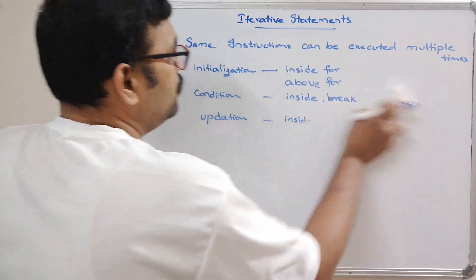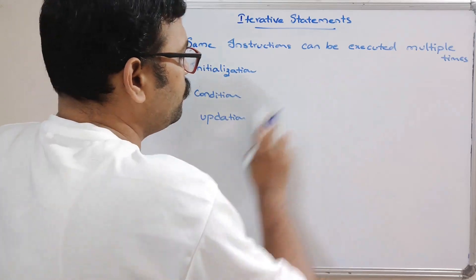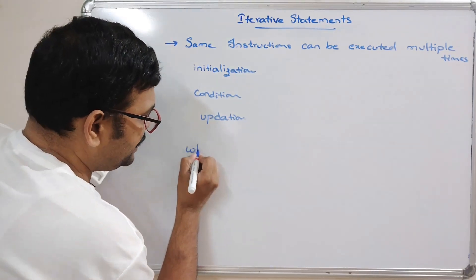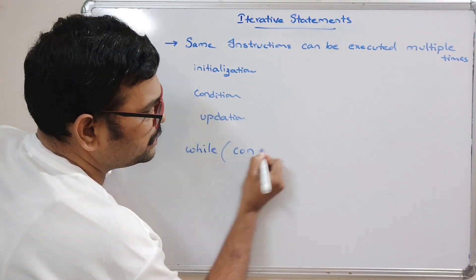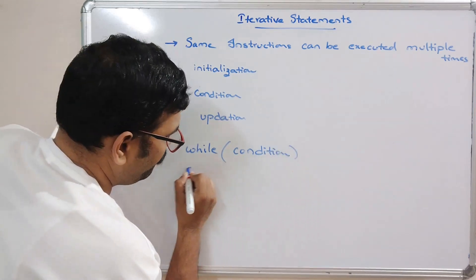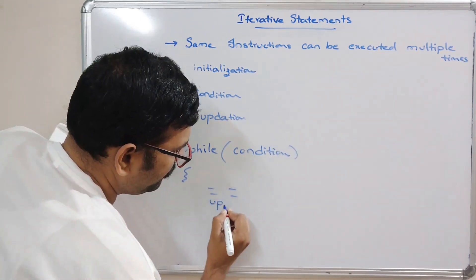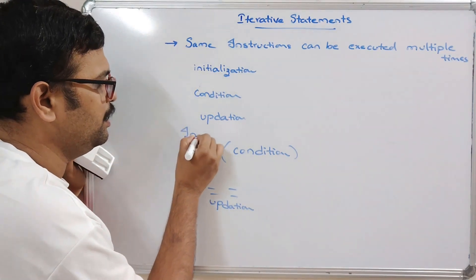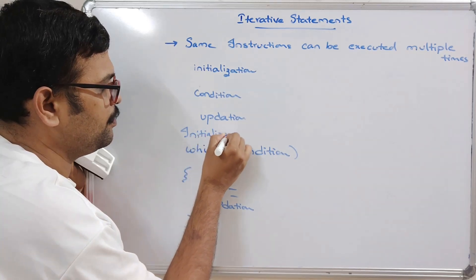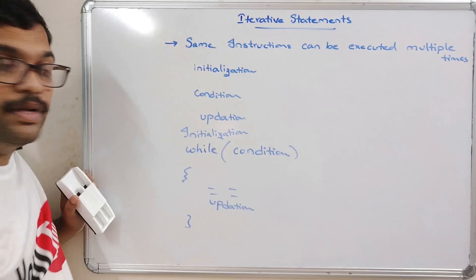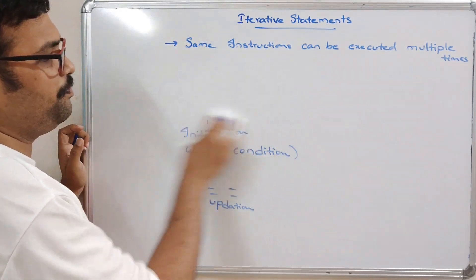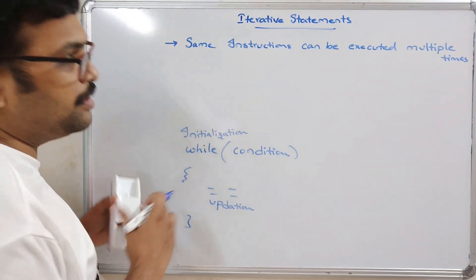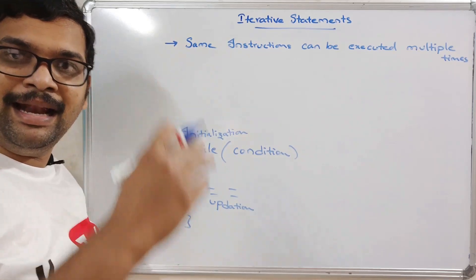For the while loop also we have to follow the same three things: initialization, condition, and updation. The syntax is: 'while' followed by the condition in parentheses, then the statements and updation inside the block, and the initialization is written before the while loop. This is the syntax for while.